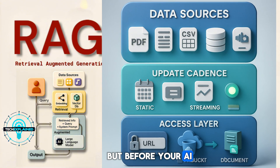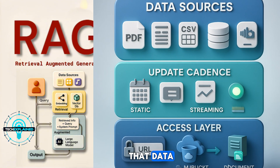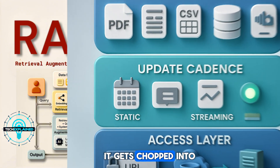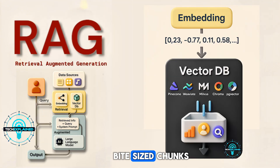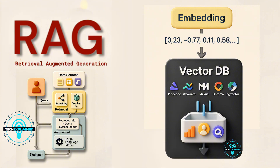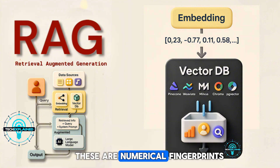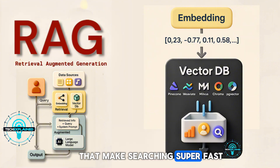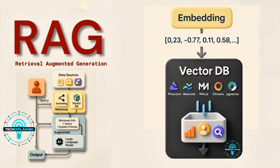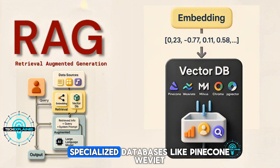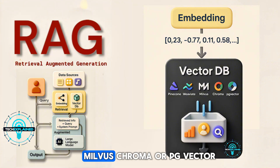But before your AI can use any of that data, it gets chopped into bite-sized chunks and converted into something called embeddings — basically numerical fingerprints that make searching super fast. They get stored in specialized databases like Pinecone, Weaviate, Milvus, Chroma, or PG Vector.